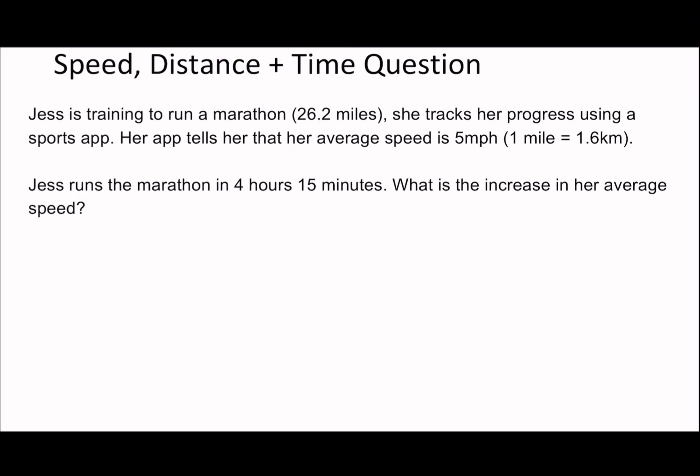Let's get into the questions where we can showcase these ideas. Jess runs the marathon in 4 hours and 15 minutes. As soon as I see this, I think 4.25 hours. Speeds are normally given in miles per hour, not per minute. The question: Jess is training to run a marathon, 26.2 miles. Her app shows an average speed of 5 miles per hour. What is the increase in her average speed?